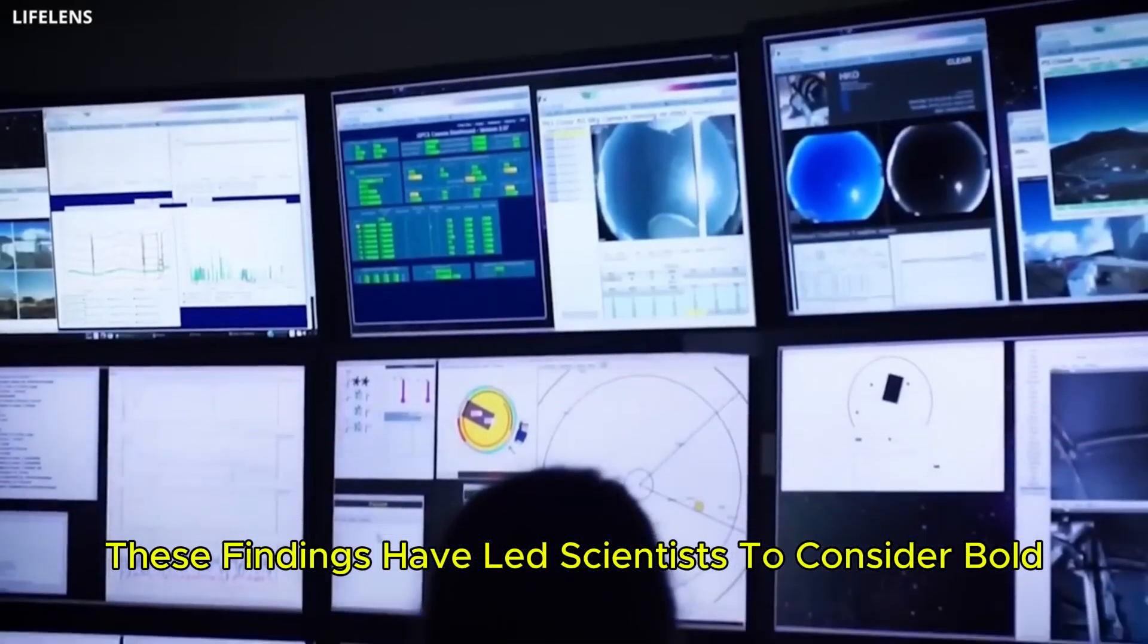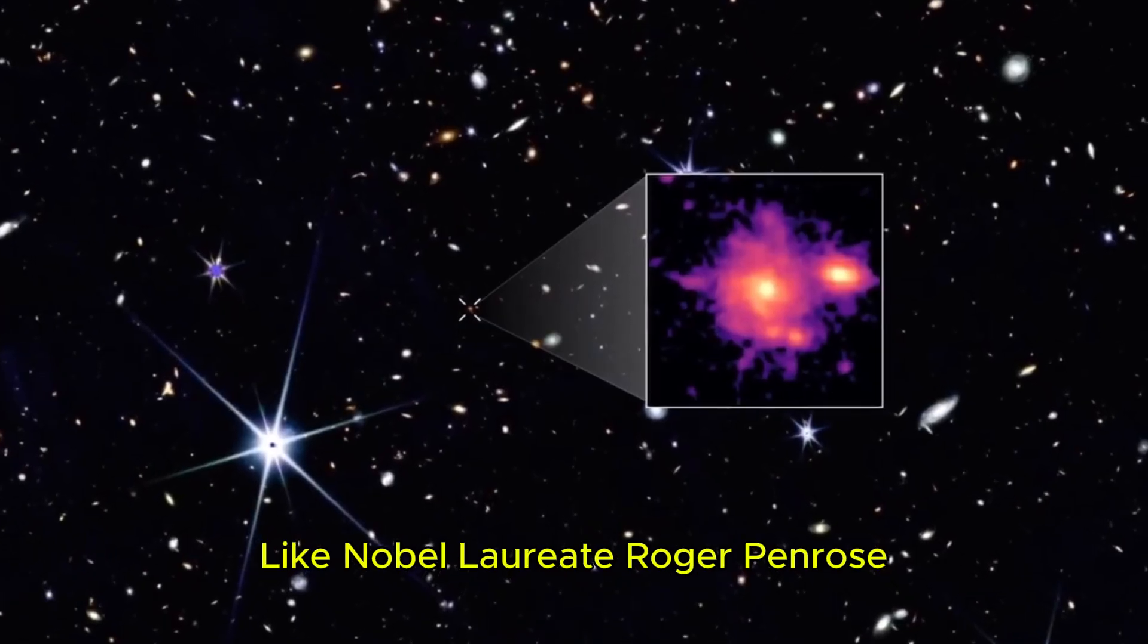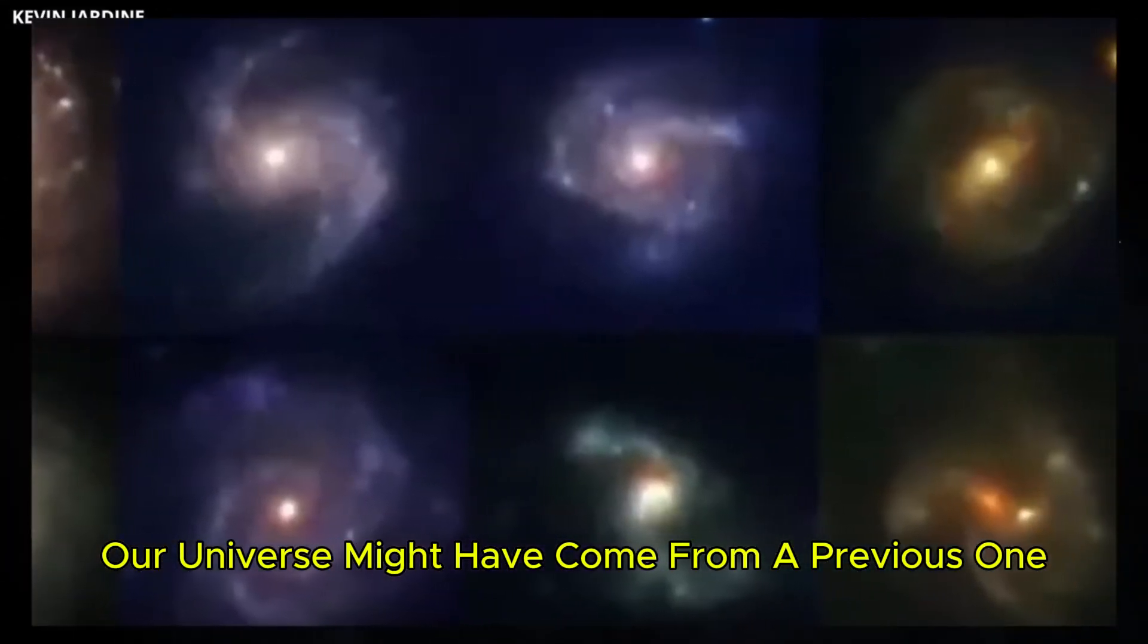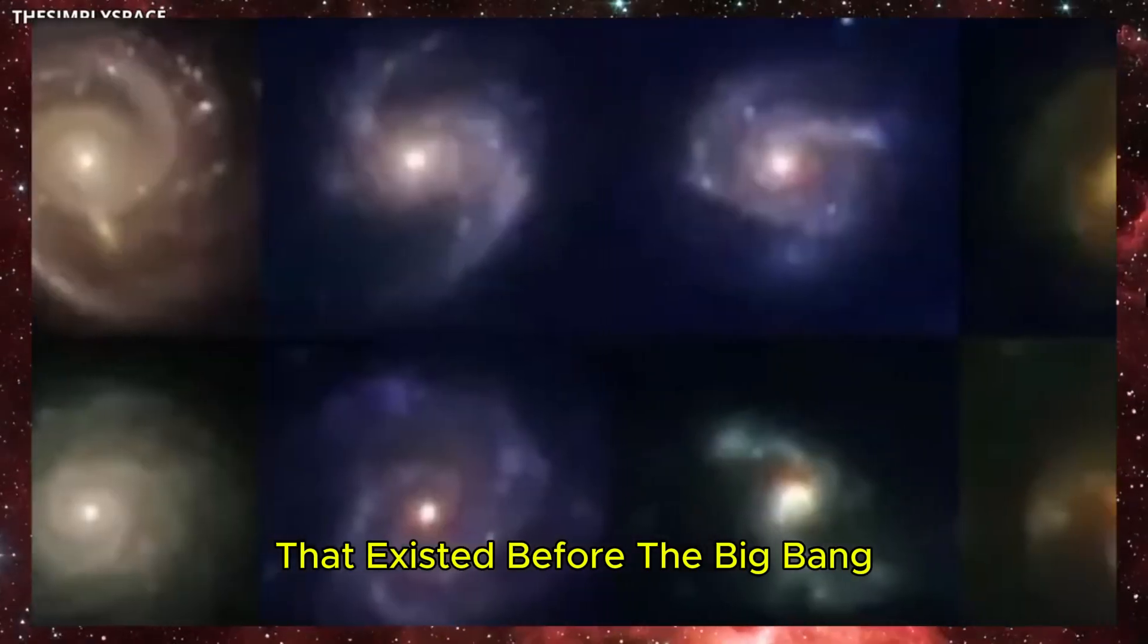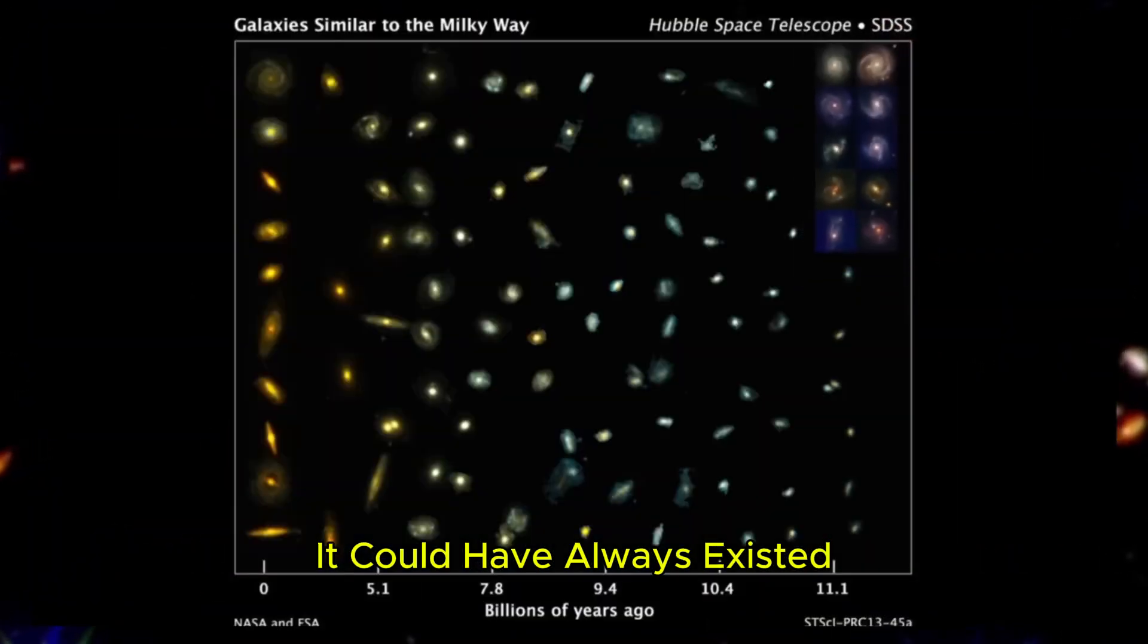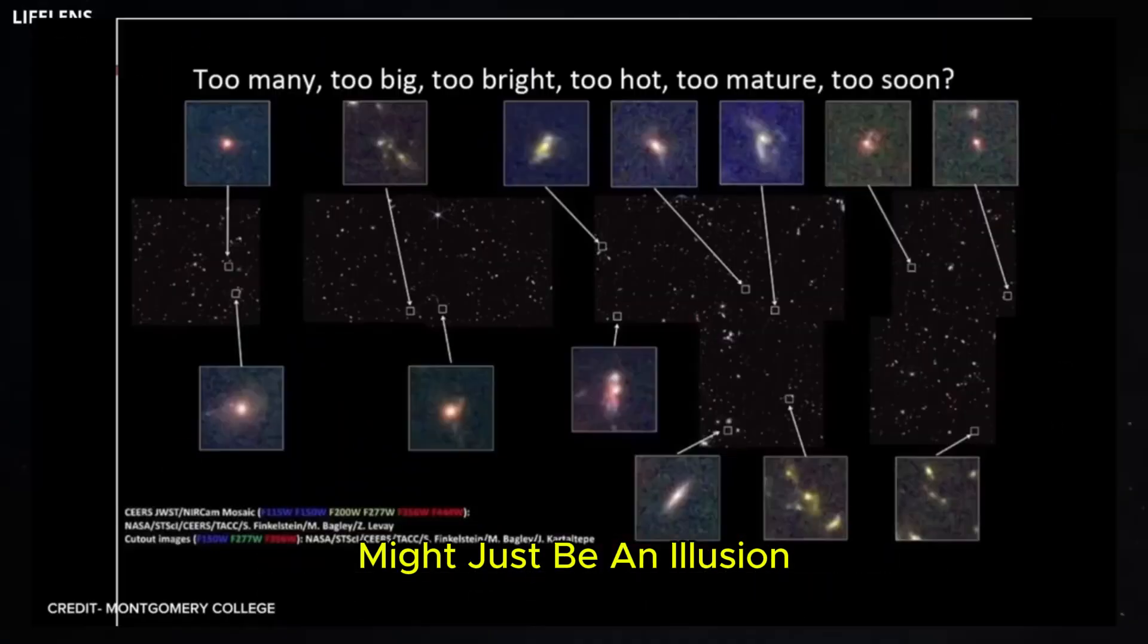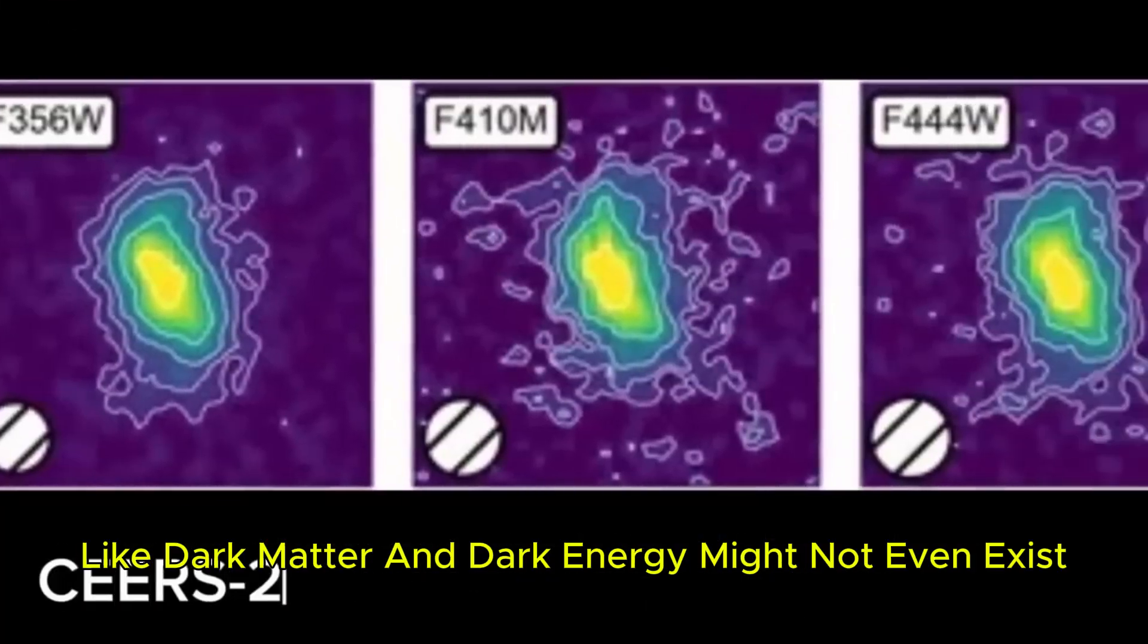These findings have led scientists to consider bold new theories. Some, like Nobel laureate Roger Penrose, suggest our universe might have come from a previous one. Others think there could be a mirror universe that existed before the Big Bang. Some even say the universe might not have had a beginning at all. It could have always existed. There are also ideas that the expansion of the universe might just be an illusion and that mysterious things like dark matter and dark energy might not even exist.